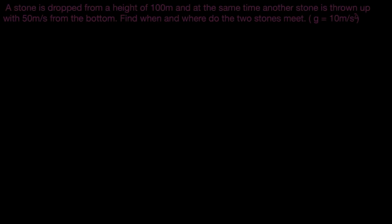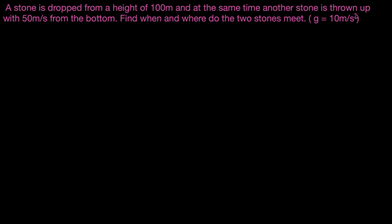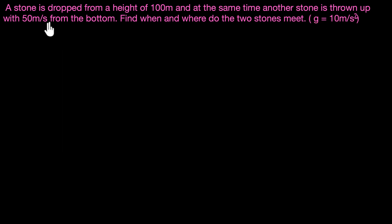Let's solve a problem on two objects in free fall. A stone is dropped from a height of 100 meters, and at the same time, another stone is thrown up with 50 meters per second from the bottom. Find when and where do the two stones meet.